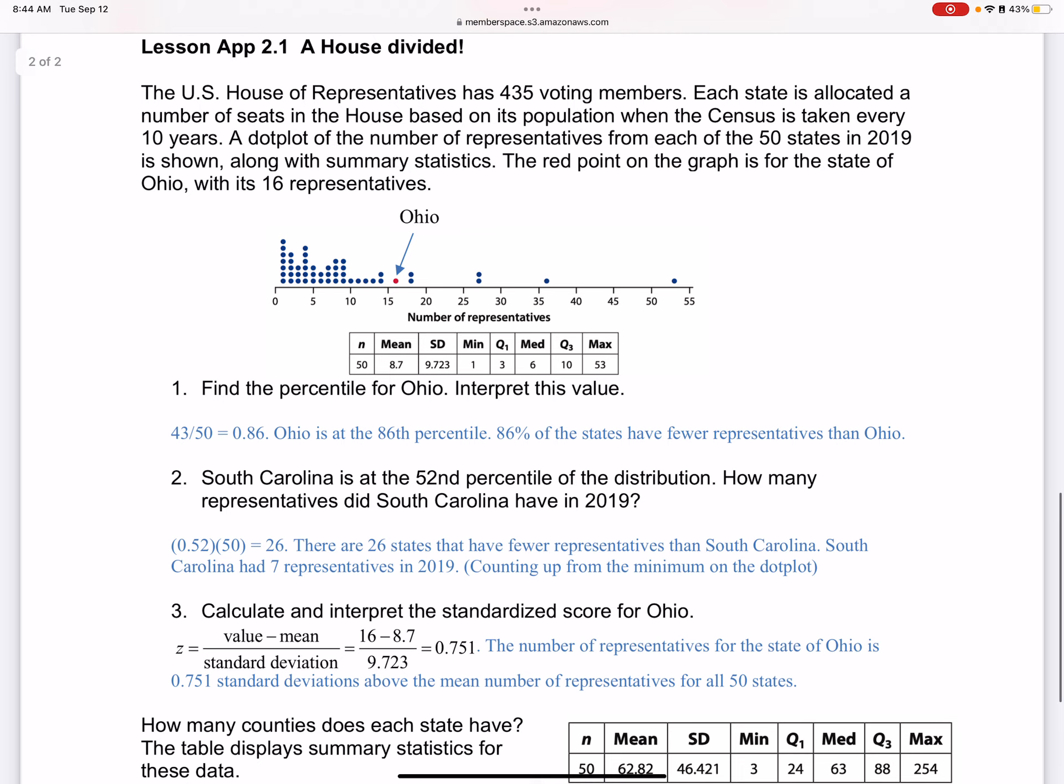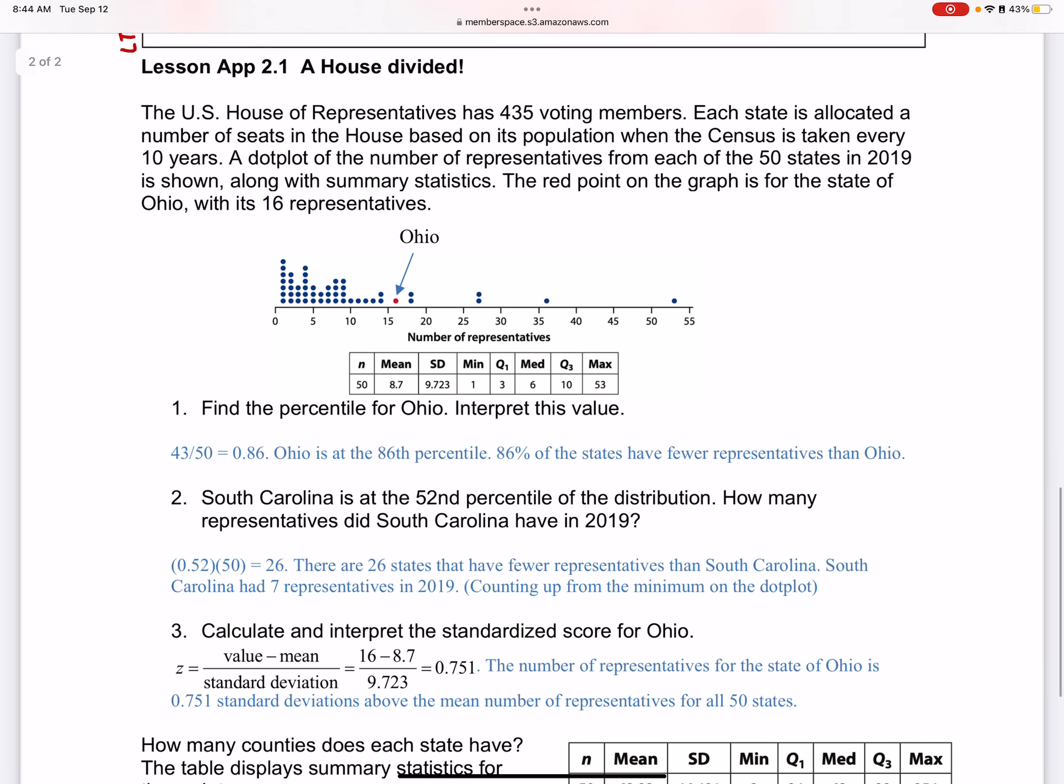For the first one, make sure that you do this work before you watch the video. Find the percentile for Ohio, interpret this value, and you can see Ohio is right there in red. I found there were 50 dots here, and Ohio is the 43rd. So since it's the 43rd out of 50, we call that the 86th percentile.